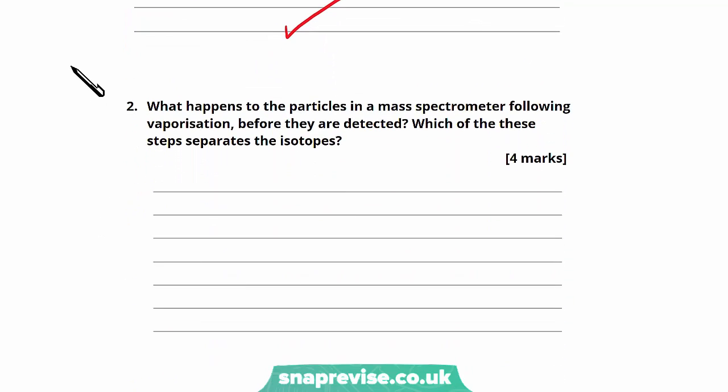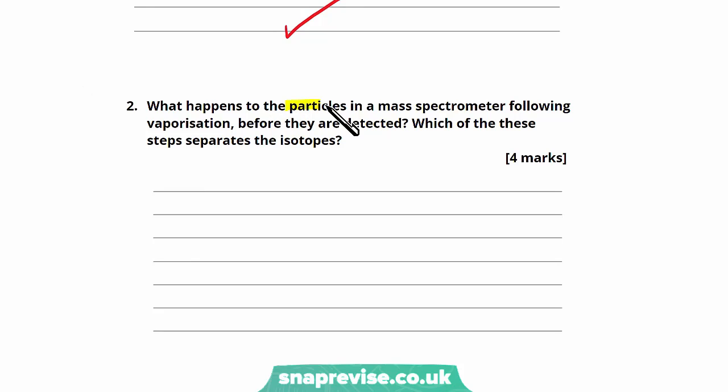Moving on to question two, we're asked what happens to the particles in a mass spectrometer following vaporization and before they are detected. And secondly, we're asked which of these steps separates the isotopes. So we know the process involved in mass spectrometry. We know after vaporization we then have ionization.